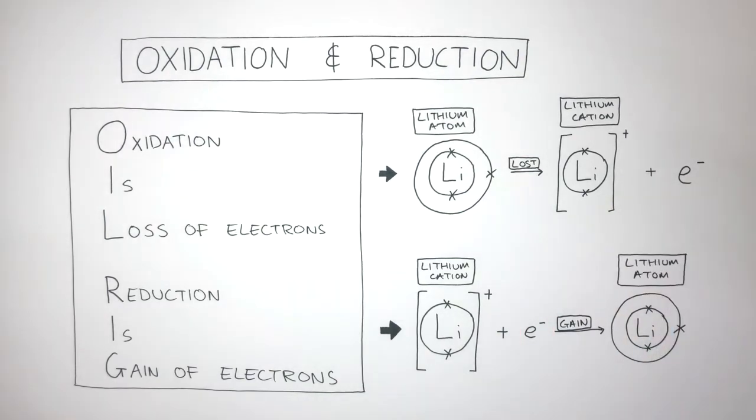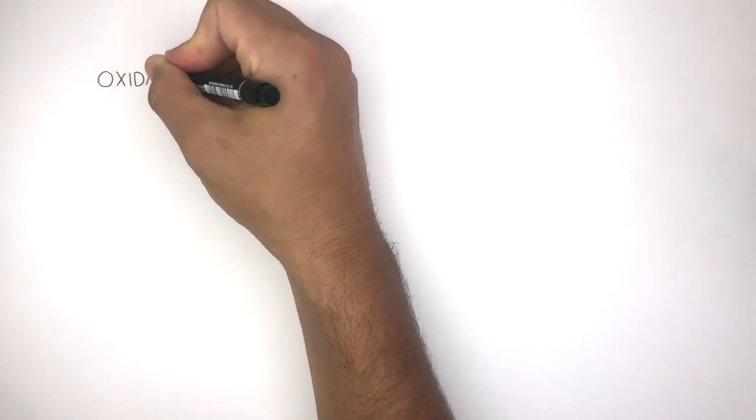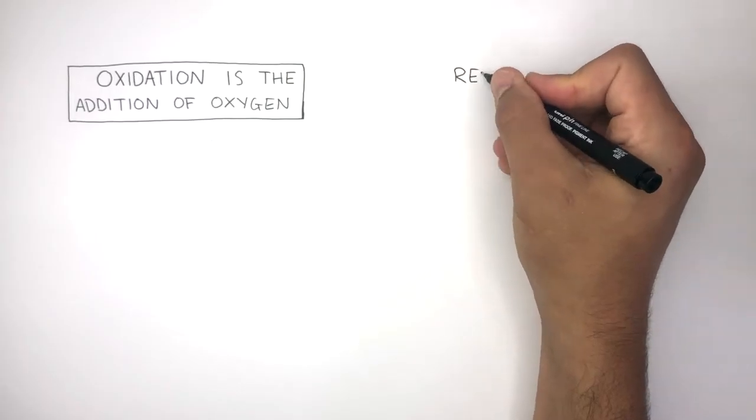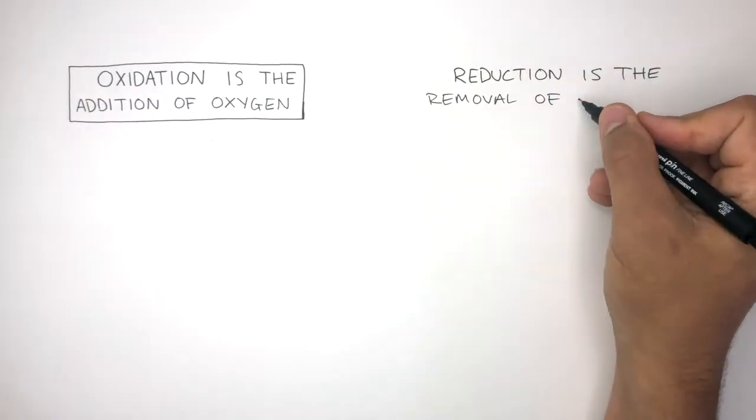Oxidation and reduction aren't just to do with the loss or gain of electrons. There's another way that you need to understand what they are. This way is oxidation is the addition of oxygen and reduction is the removal of oxygen.